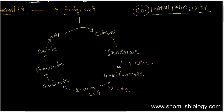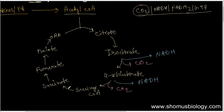First, from isocitrate to alpha-ketoglutarate — that gives us NADH. Second, the alpha-ketoglutarate dehydrogenase enzyme also gives us NADH. Third, succinyl CoA to succinate via succinate dehydrogenase gives us FADH2. Fourth, malate to oxaloacetate via malate dehydrogenase also gives us NADH.